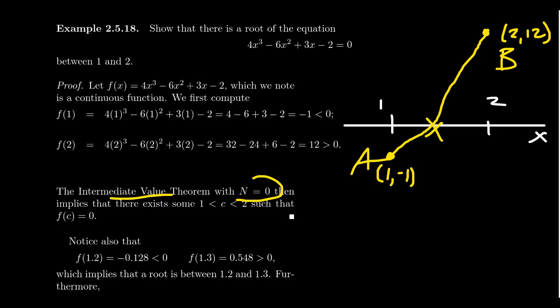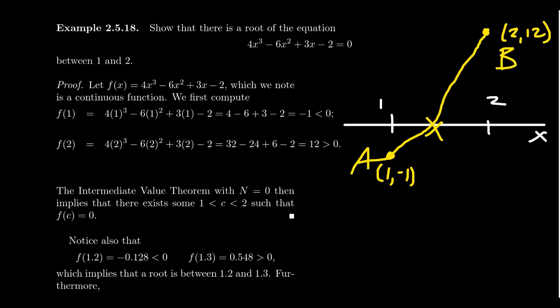The Intermediate Value Theorem using the intermediate value 0, you'll notice 0 is between -1 and 12. Because the function is continuous, the function is somewhere negative and somewhere positive, there must be an x-intercept somewhere between 1 and 2. So we can guarantee the solution to this equation by the Intermediate Value Theorem, even though we don't actually know what the solution is.